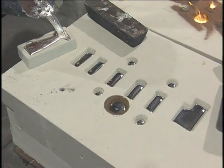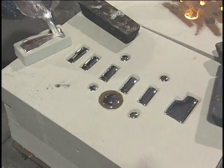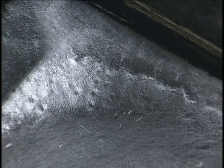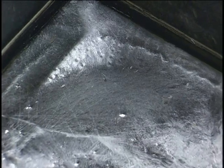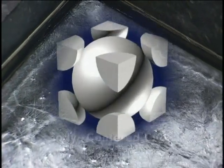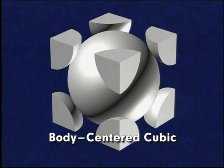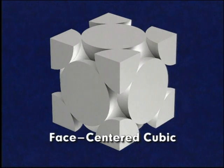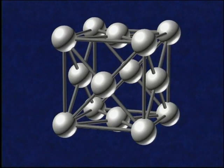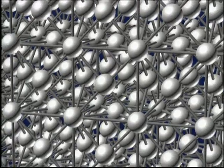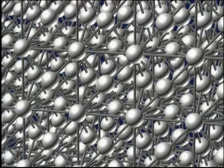When a molten metal solidifies, the atoms arrange themselves into definite patterns called crystal structures. The two most common crystal structures in metals are body-centered cubic and face-centered cubic. These crystal structures grow uniformly in all directions within each developing crystal.